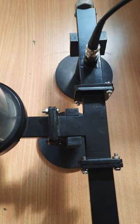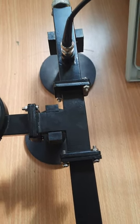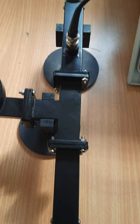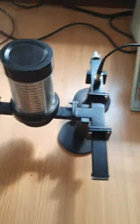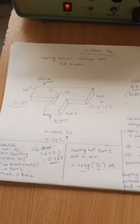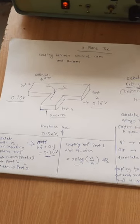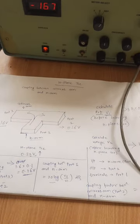Both port one and port two output 0.16 volt when 0.32 volt is given to the H-arm, confirming they are equal in magnitude as well as equal in phase. This completes the H-plane T experiment. Hope all of you understood the experiment. Thank you very much.